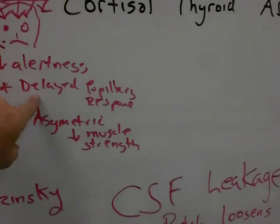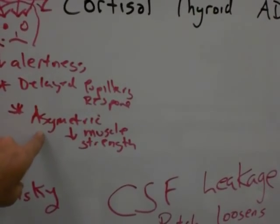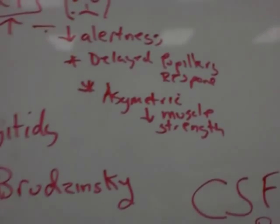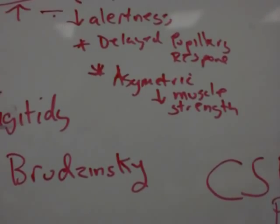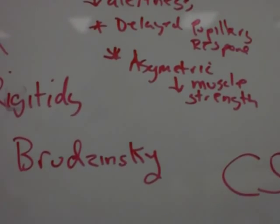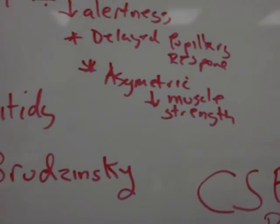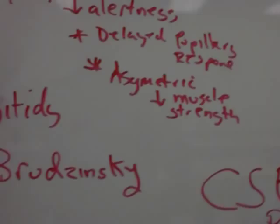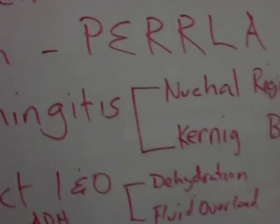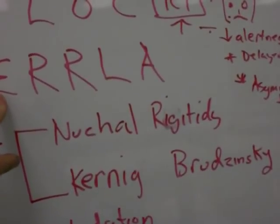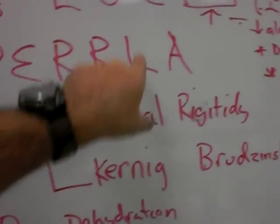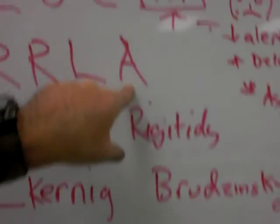Other signs include delayed pupillary response and asymmetric muscle strength — or hemiparesis, meaning weakness on one side of the body — caused by a problem in the brain such as intracranial pressure. Also check vision. PERLA — pupils equal, round, and reactive to light and accommodation — is an important assessment.